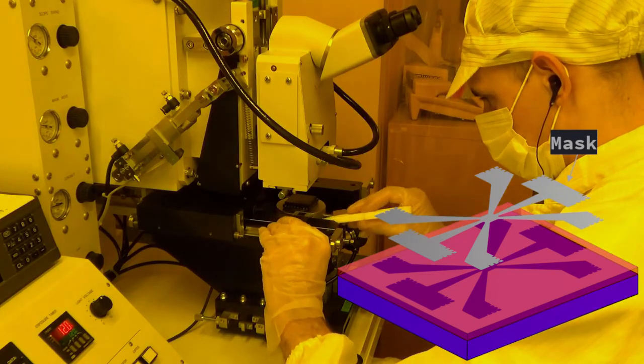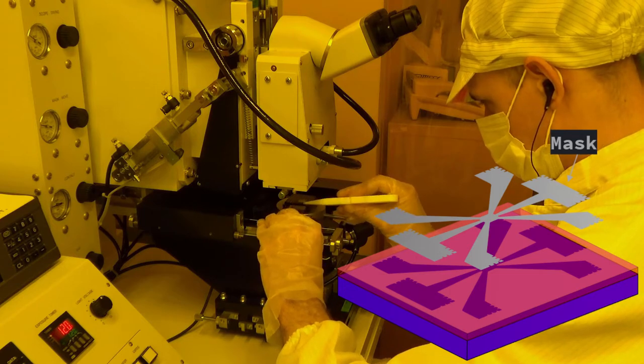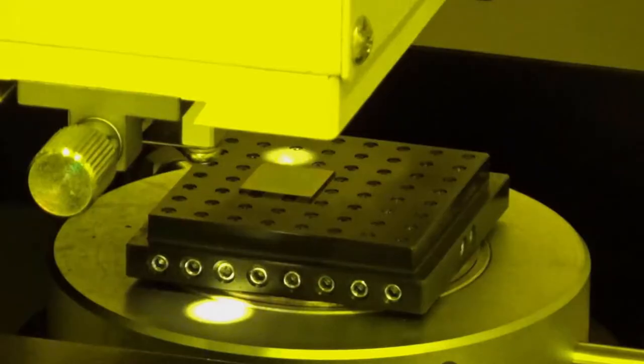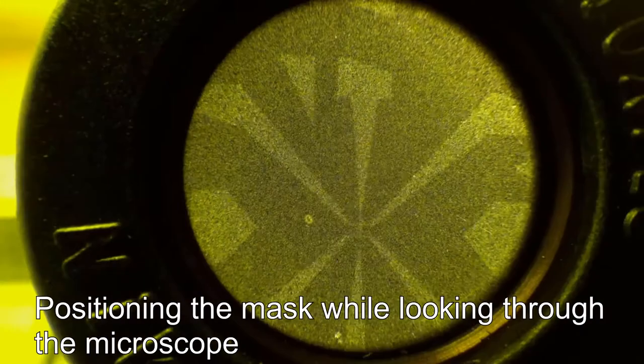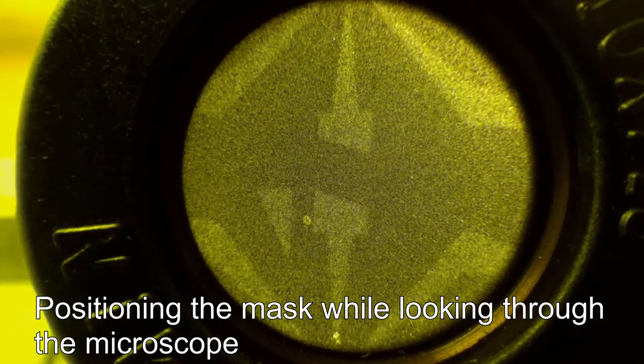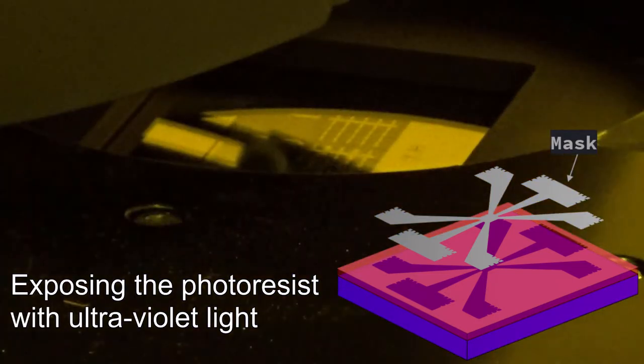Then place the chip on a stage below the mask. Using a microscope, we align the mask to the chip, then we shine ultraviolet light through the mask onto the chip surface.